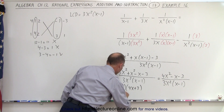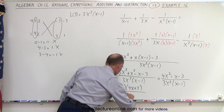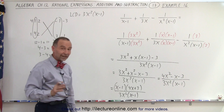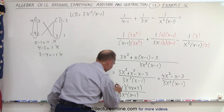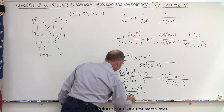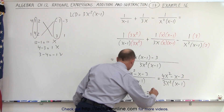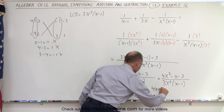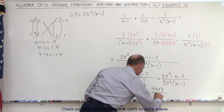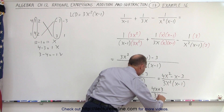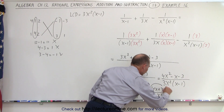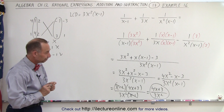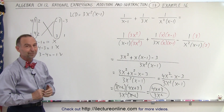In the denominator, we end up with 3x squared times x minus 1. And notice, the x minus 1s can cancel — that is nice. So we're left with 4x plus 3 in the numerator and 3x squared in the denominator. And that's the final simplified form of our original problem. And that is how it's done.